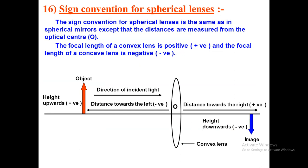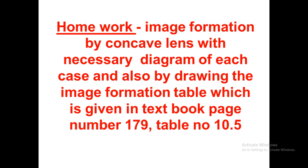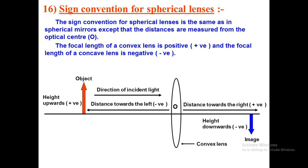Hello students, this is the seventh lecture of Chapter 10 - Light Reflection and Refraction. In the previous lecture we had some homework, and now let's start the next topic: sign convention for spherical lenses. We have already seen sign convention for mirrors, and the same convention applies to lenses.